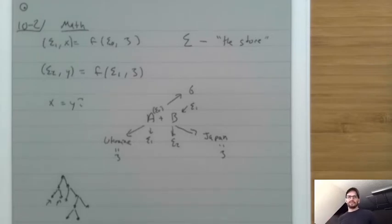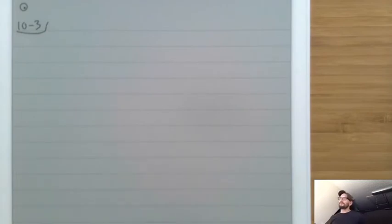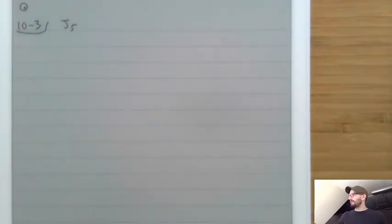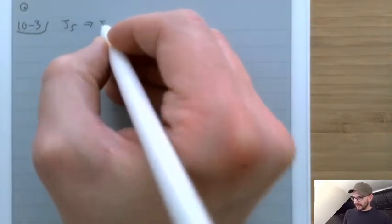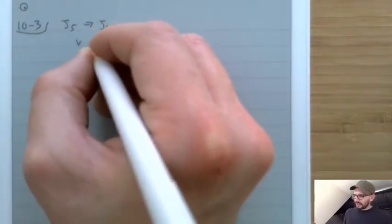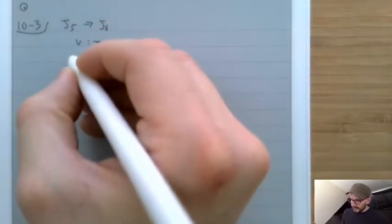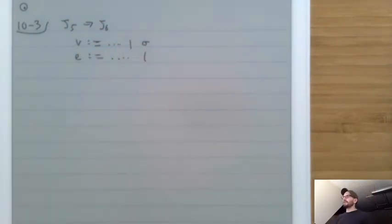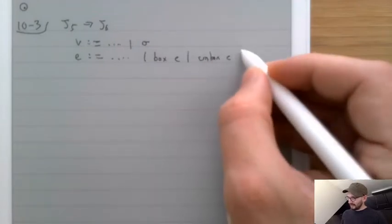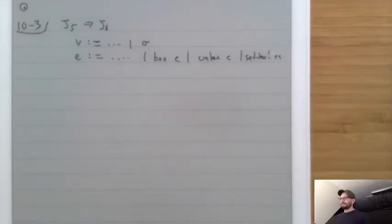Let's talk about how to actually add these features to our language. We're going to go from J5 to J6, and we're going to add to our language the following things. We're going to change our set of values to hold a new kind of thing called little sigma. We're going to change our expressions to have three more things: Box E, Unbox E, and Setbox EE.